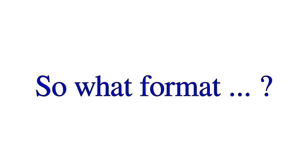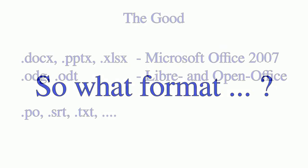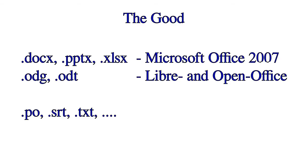Okay, this all looks cool, but what kind of documents can I use? OmegaT, for example, supports a long list of file formats, but for starters, newer Microsoft Office documents work fine, and documents saved with LibreOffice and OpenOffice work great. The same is true for simple text files, and there are some more solid formats, for example PO and subtitle files.